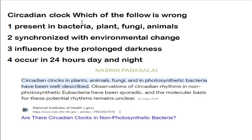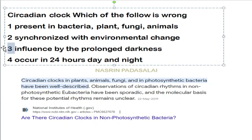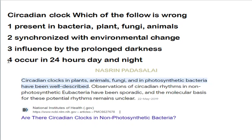Regarding circadian clocks, statements were given and the wrong one had to be identified. Correct statements: circadian clocks are present in plants, animals, fungi, and photosynthetic bacteria; they are synchronized with environmental change; they follow a 24-hour day-night cycle. The wrong statement is option 3: that the circadian clock is influenced by prolonged darkness.